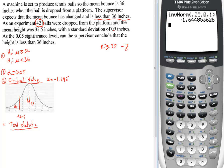So our test statistic, let's list what we know. We know mu is 36. We know our sample is 35.5. That's in here. We know our standard deviation is equal to 0.9. And we know that n is equal to 42.